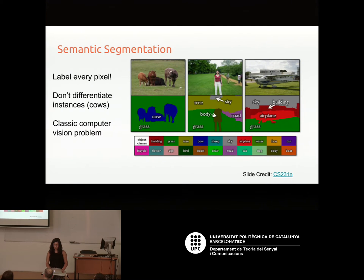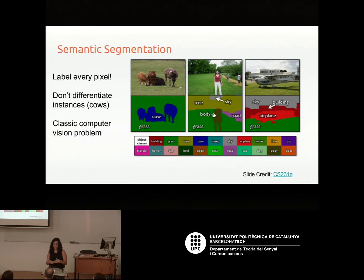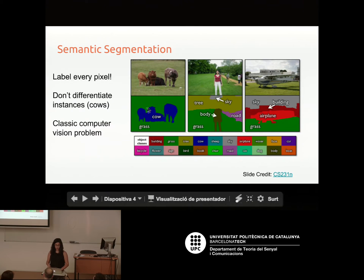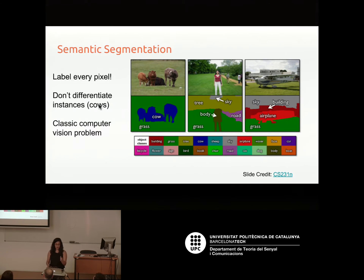When we talk about segmentation in computer vision, there are actually two separate tasks. The first one is called semantic segmentation, which is the task of labeling every pixel with a class. You'll notice that you don't differentiate between instances in the same image. Here in the image with the cows and the grass, you see that there's this blob, but you don't know how many cows are there based on that output. This is basically the most common task that computer vision scientists have been working on when they refer to segmentation.